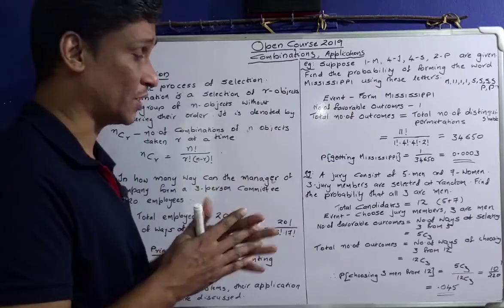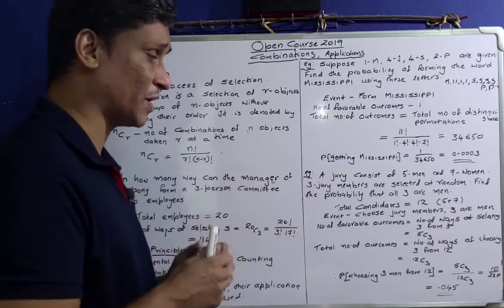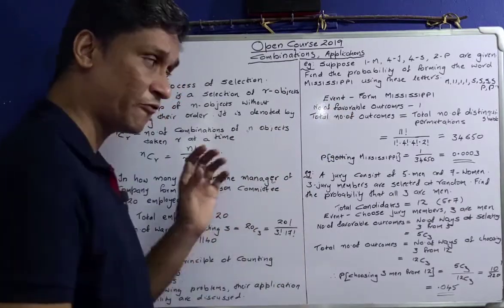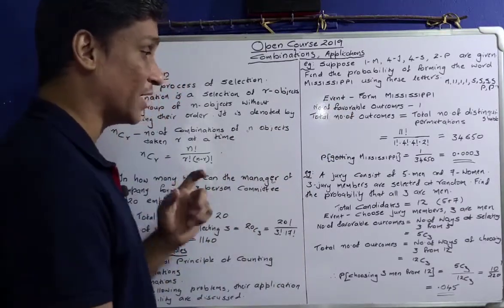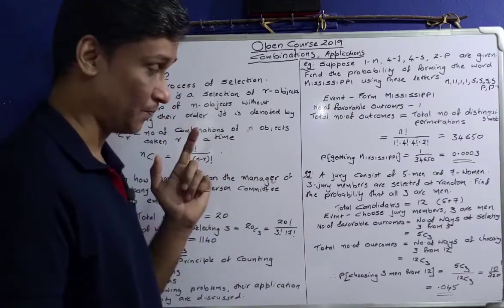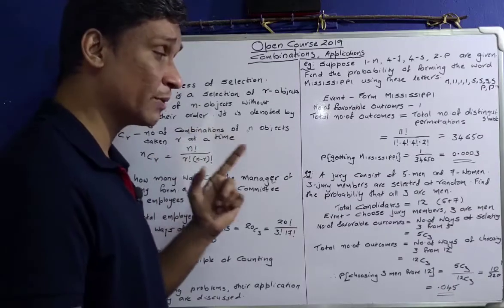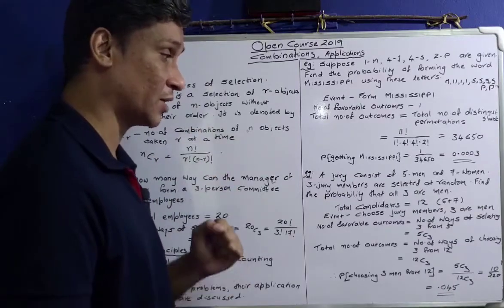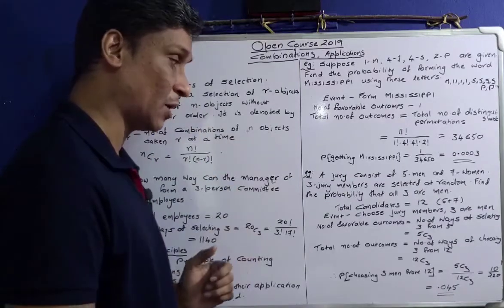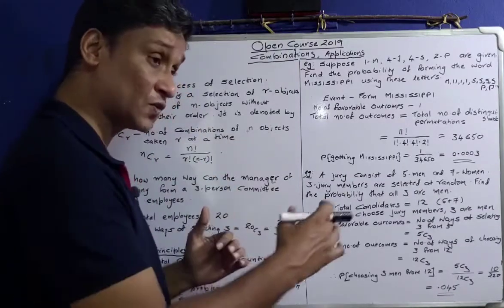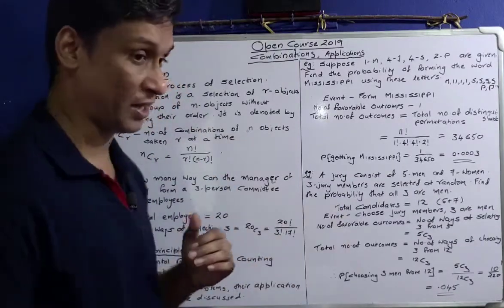A jury consists of five men and seven women. Three jury members are selected at random. Find the probability that all three are men.